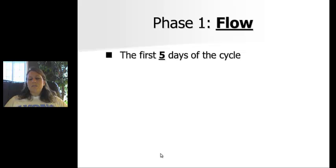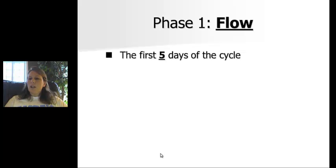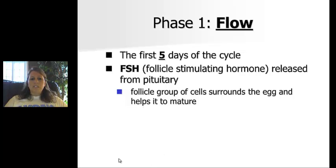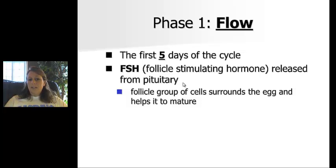The flow phase is the first five days of the cycle. There are diagrams in your online textbook that may be helpful to reference as I describe the phases, peaks, and hormones. The first hormone released is FSH, which stands for follicle stimulating hormone, and it is released from the pituitary gland in the brain. A follicle refers to a group of cells that surrounds the egg, and FSH helps that egg to mature so that it can be fertilized by sperm.